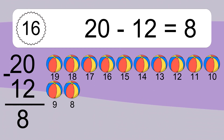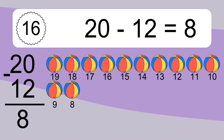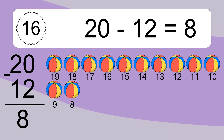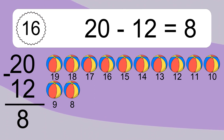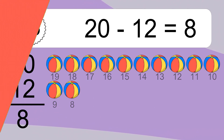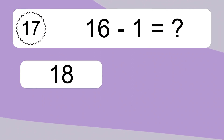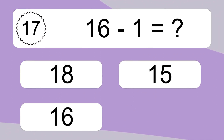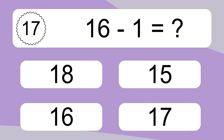20 minus 12 equals what? Let's count it. 19, 18, 17, 16, 15, 14, 13, 12, 11, 10, 9, 8.